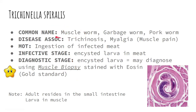Trichinella spiralis — the common names of this parasite are the muscle worm, garbage worm, and pork worm. The disease associated with this parasite is trichinosis and myalgia, or muscle pain.